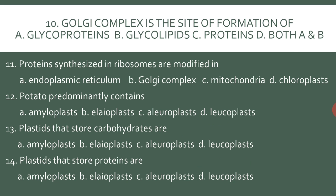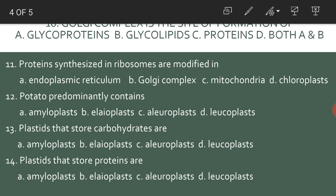The Golgi complex is the site of formation of both glycoproteins and glycolipids — again, both A and B. Proteins synthesized in ribosomes are modified in the Golgi complex.